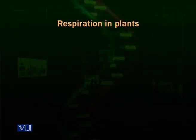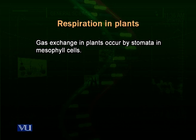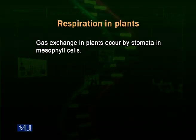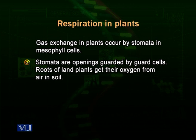In plants, gaseous exchange occurs by stomata in the mesophyll cell layer. There are openings called stomata — plural — and stoma — singular. A surface of a leaf has many stomata on its lower layer in the mesophyll cell. These stomata are openings around which are present some cells called guard cells. When these cells swell up, the opening is open and exchange of gases can take place. When these guard cells shrink again, the result is that the stomata are closed.